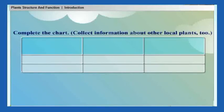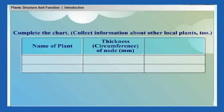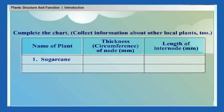Complete the chart and collect information about other local plants too. The chart includes: name of plant, thickness (circumference of node in millimeters), and length of internode in millimeters. Example plants: sugarcane and fenugreek.